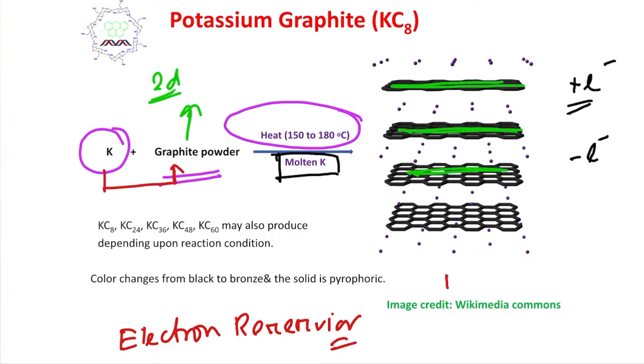We know potassium has a tendency to become potassium plus plus electron, because it has only one electron in the outermost valence shell. It prefers to give that electron and get the next inert gas configuration. Potassium plus is produced.